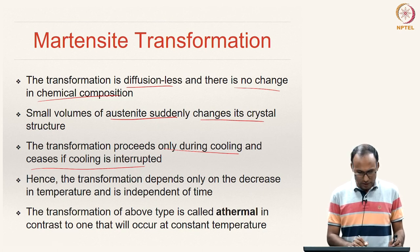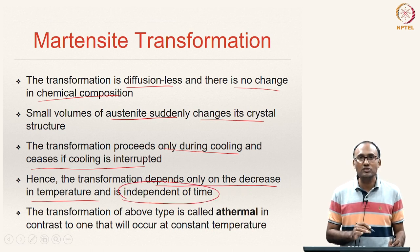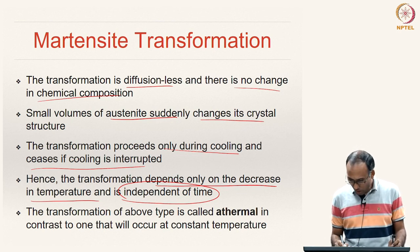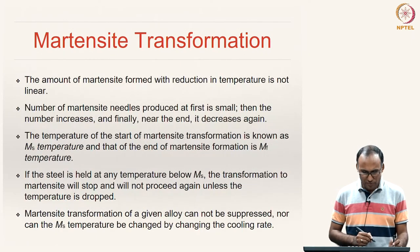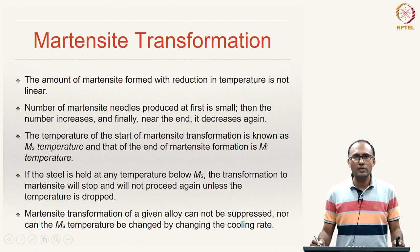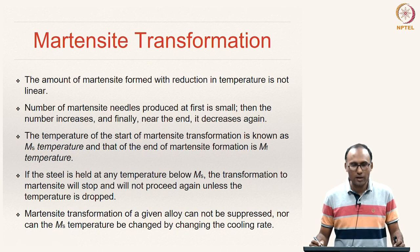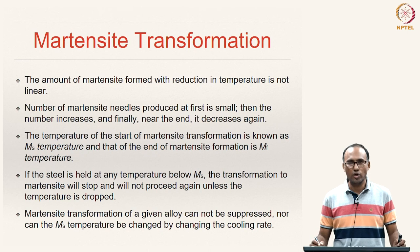The transformation proceeds only during cooling and ceases if cooling is interrupted. Hence the transformation depends only on the decrease in temperature and is independent of time — it is not a diffusional process. This type of transformation is called an athermal transformation. We will discuss martensite transformation in more detail in the next class, along with the effect of cooling rates on obtaining different microstructures for eutectoid steels.